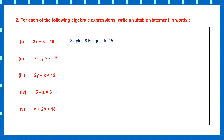First one: 3x plus 8 is equal to 15. You can also say 'the sum of 3x and 8 is equal to 15.' You can also say '3x plus 8 gives 15.' All these mean the same.